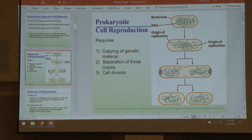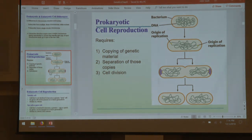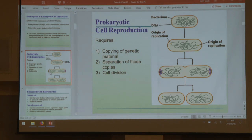Prokaryotic cell division is very simple compared to eukaryotes. This is called binary fission — prokaryotes do not reproduce sexually; they simply clone themselves and split into daughter cells. They copy their genetic material, separate the copies, and then split the cell, as we can see in the picture.